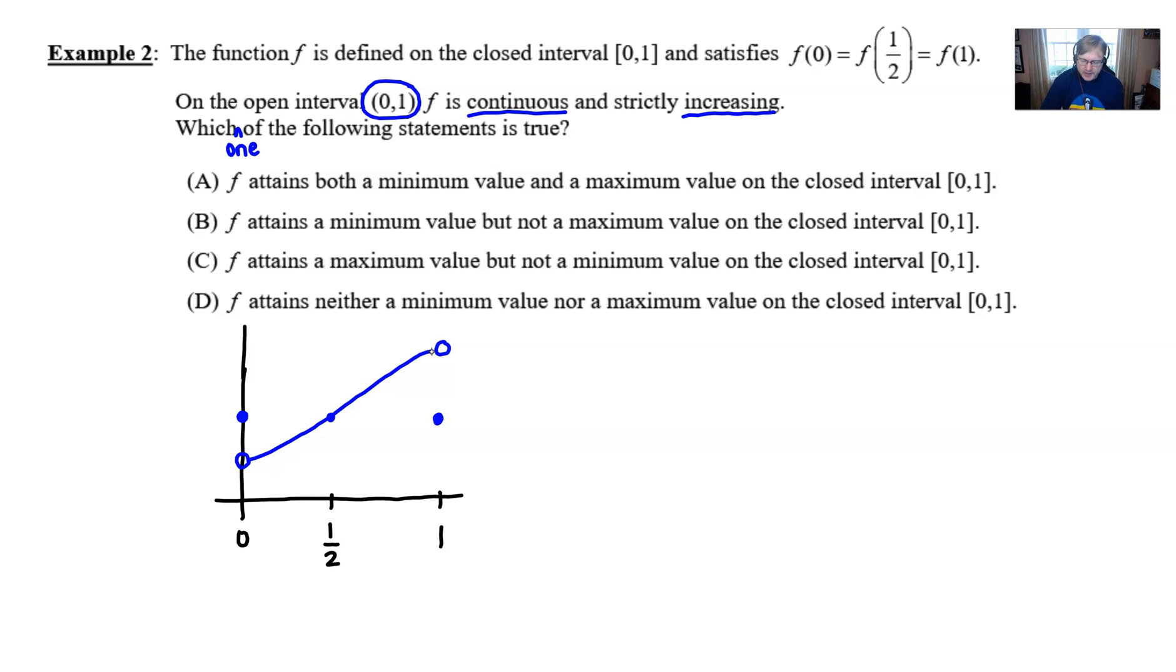Because part A says, well, f has to attain both a minimum and a maximum value. And that's not true. That is not true. Now, some of us might think, well, doesn't that refute the extreme value theorem? Because doesn't the extreme value theorem say that f is going to have a max and a min on this interval [0,1]? Yes, it does. If